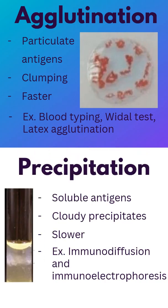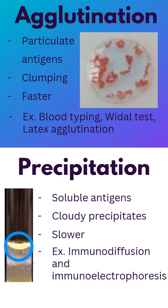Precipitation is slower, uses soluble antigens, and forms cloudy precipitates. Examples would be immunodiffusion and immunoelectrophoresis.